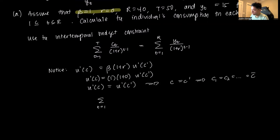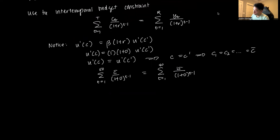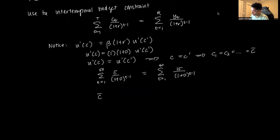Sum from t=1 to 50 of C-bar/(1+0)^(t-1) equals sum from t=1 to 40 of 15/(1+0)^(t-1). We can simplify this as C-bar times sum from t=1 to 50 of 1, since C-bar is constant and 1 raised to anything is 1.